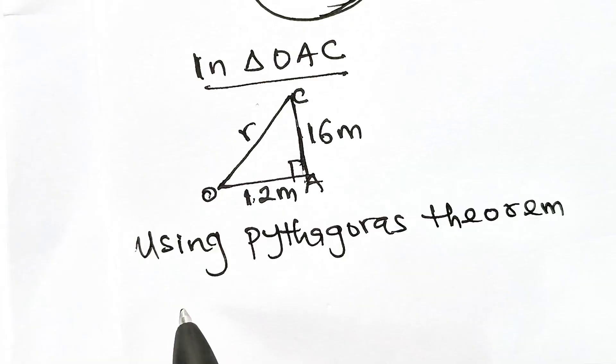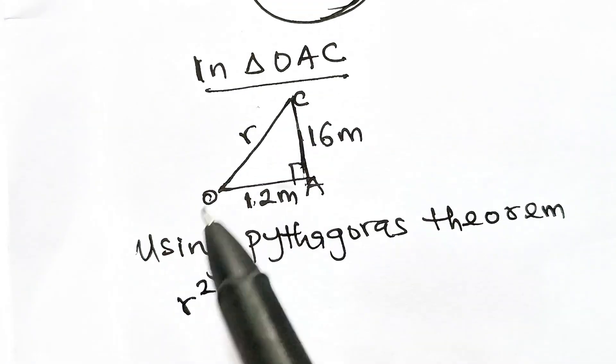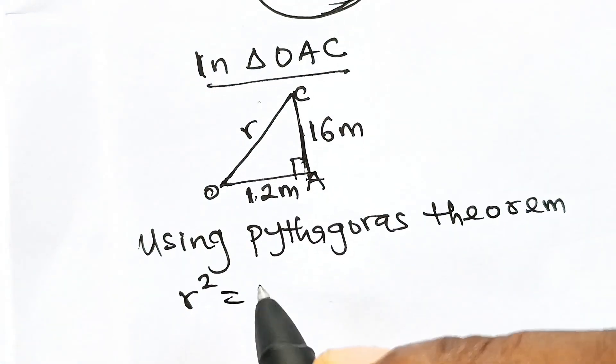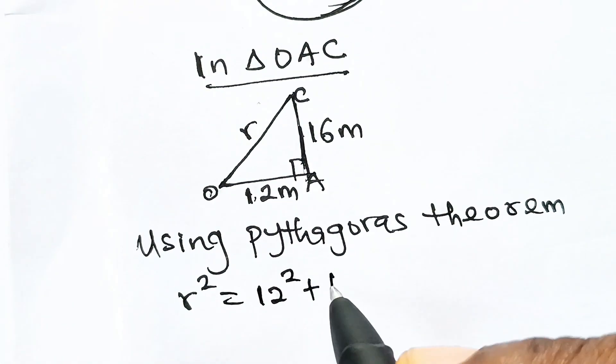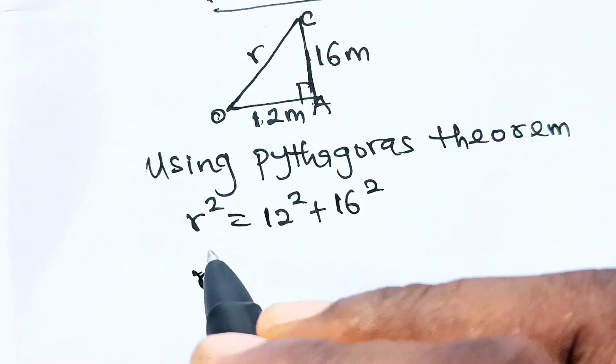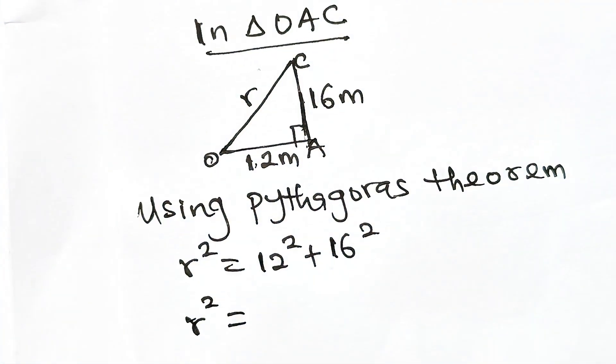We can see that r², which happens to be the hypotenuse of this triangle, is equal to 12² + 16². So r² = 12². Now 12² is 144, so we have 144 plus 16².